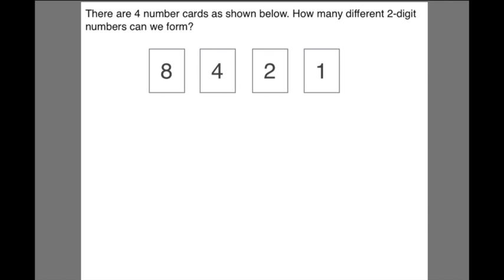The teacher might teach you the method which is you use 8 first, then you have 8, 4, 8, 2, 8, 1, then you go 1 to 4, then 4, 8, 4, 2, 4, 1. Now this is actually the correct method. It is only useful when the number cards are only 4 number cards and you are going for 2 digit numbers.